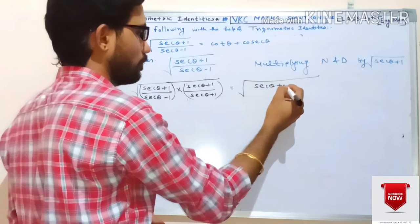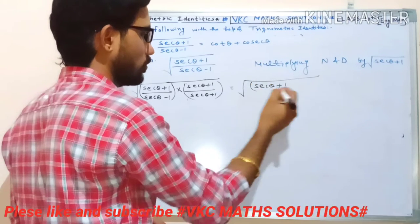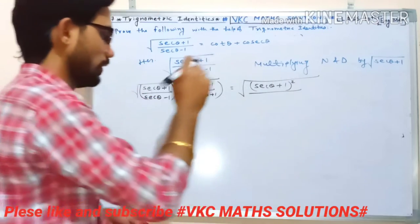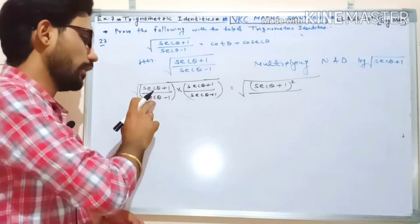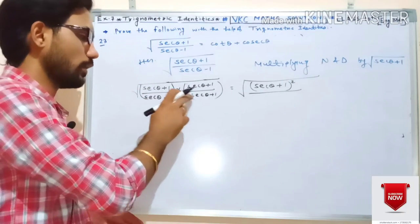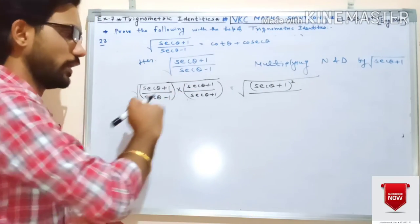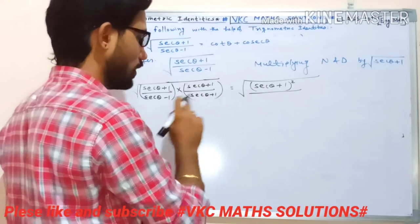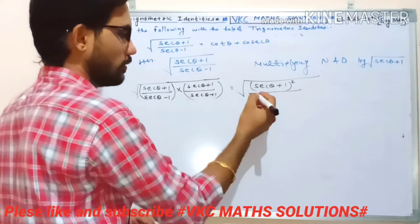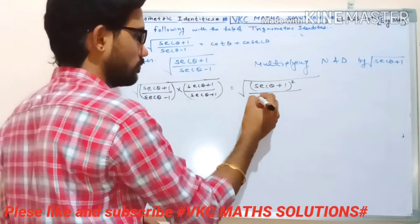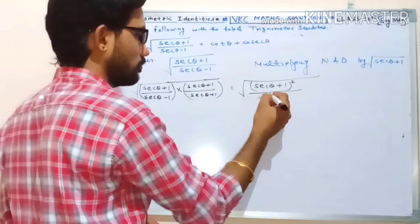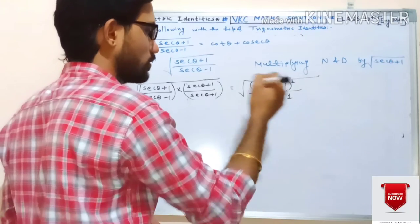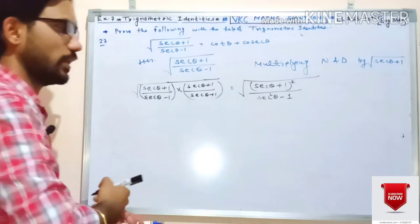So the numerator becomes (secθ + 1)² (whole square). In the denominator, we have (a − b) multiplied by (a + b), which gives the identity a² − b². So the denominator becomes sec²θ − 1, and 1² is just 1.